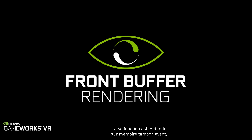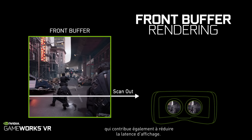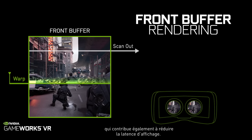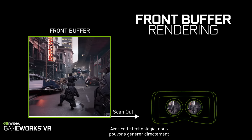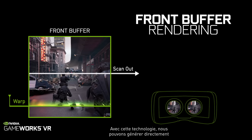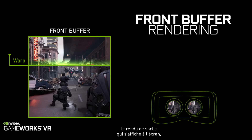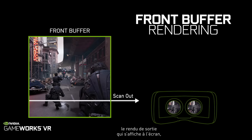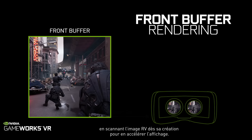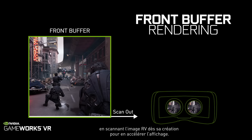The fourth feature is called front buffer rendering, and this is another technique for reducing latency in virtual reality. With front buffer rendering, we can render directly to the frame that is being output to the display, scanning the image out as soon as it is warped, and thereby reduce latency.